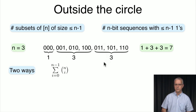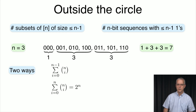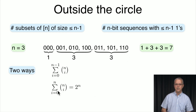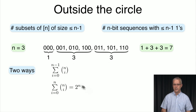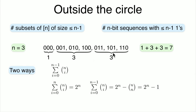We can use the identity we proved: since the full sum up to n equals 2 to the n, the sum up to n minus 1 equals 2 to the n minus the last term, which is n choose n = 1. So it's 2 to the n minus 1. For n=3, that's 2 cubed minus 1 = 7, confirming our count.